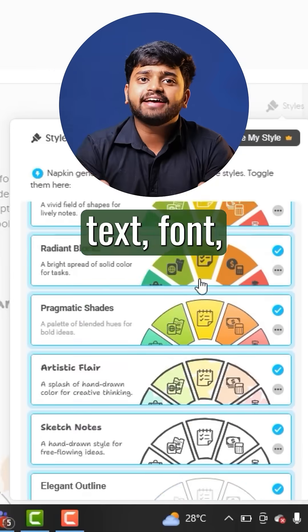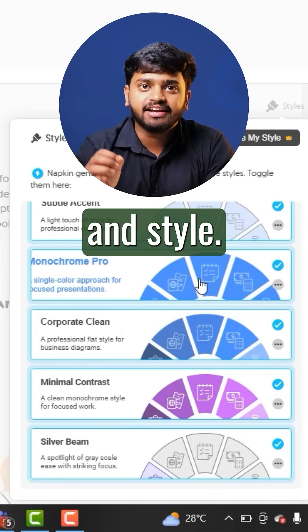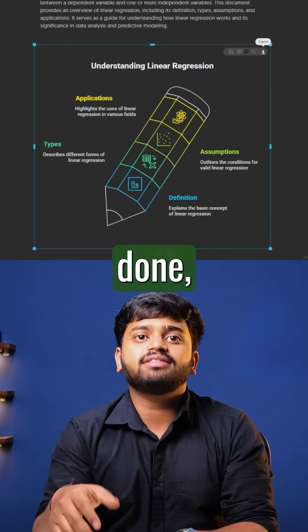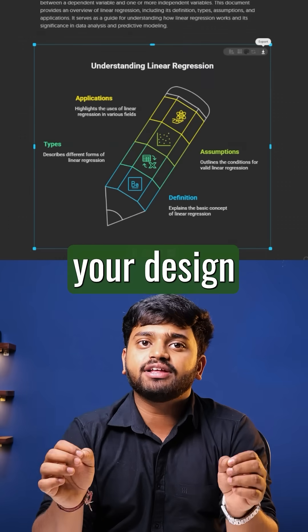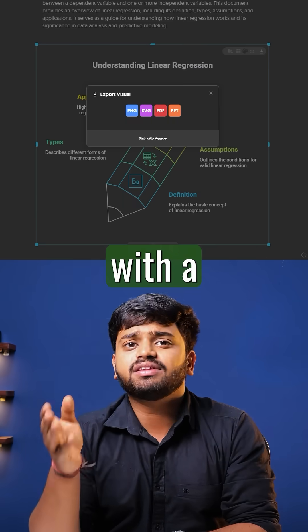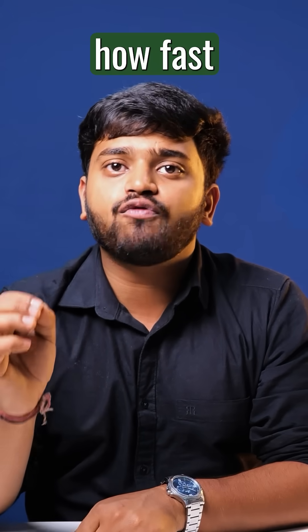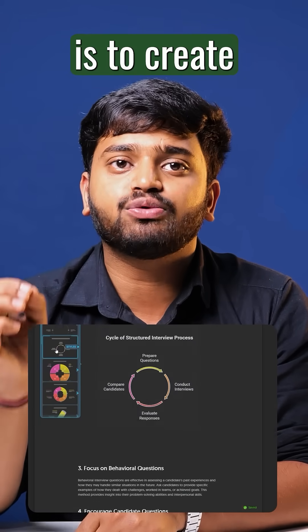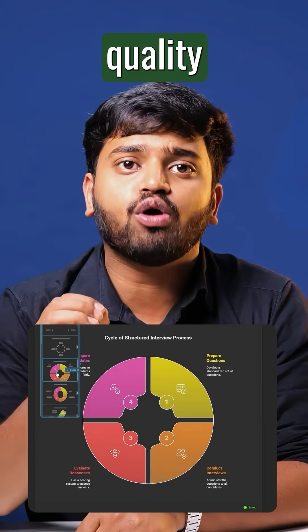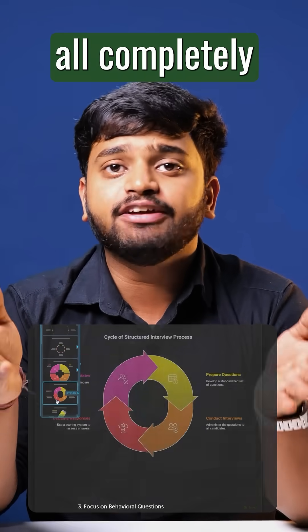You can customize everything — text, font, color, layout, and style. Once you are done, simply download your design in ultra high resolution with a single click. What makes Napkin AI unique is how fast and easy it is to create professional quality visuals, all completely free.